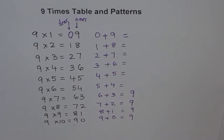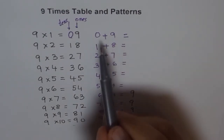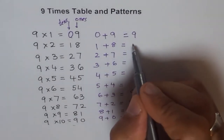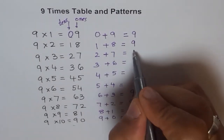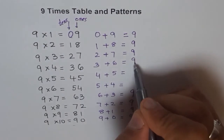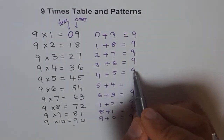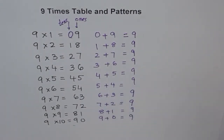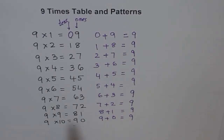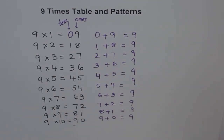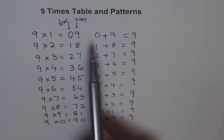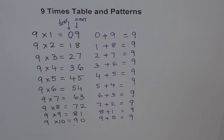That's funny! 0 plus 9 is 9. 1 plus 8 is 9. 2 plus 7 is 9. 3 plus 6 is 9. 4 plus 5 is 9. 5 plus 4 is 9. Whenever you add these digits, you always get 9. So when you add the tens and ones digits, you always get 9 in the 9's times table. That's interesting!